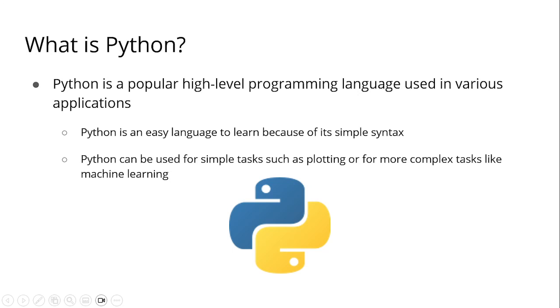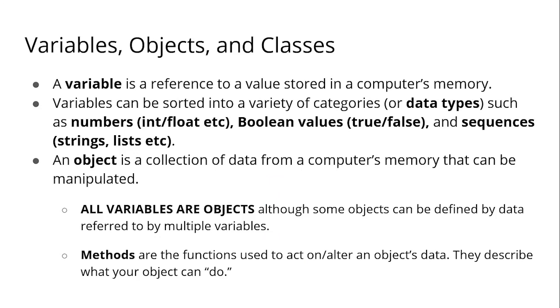Python is really used for machine learning. Next is variables, objects, and classes. A variable is a reference to a value stored in a computer's memory.